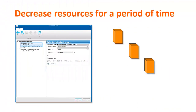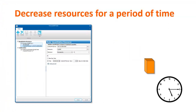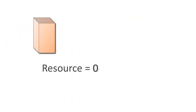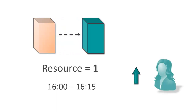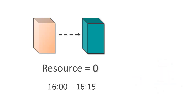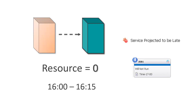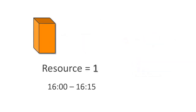Now we'll talk about creating a BIM forecast rule for a scenario where you need to decrease a resource for a certain amount of time. Let's say you have a resource that someone is setting to zero for 15 minutes to do another function, for example, a backup. And when the backup is finished, the user needs to increase the resource. Because the resource is set to zero at some point in time, BIM will issue an alert that the service will be late. This happens because BIM sees that there's a job that needs the resource and the resource is set to zero, so BIM issues a false alert.